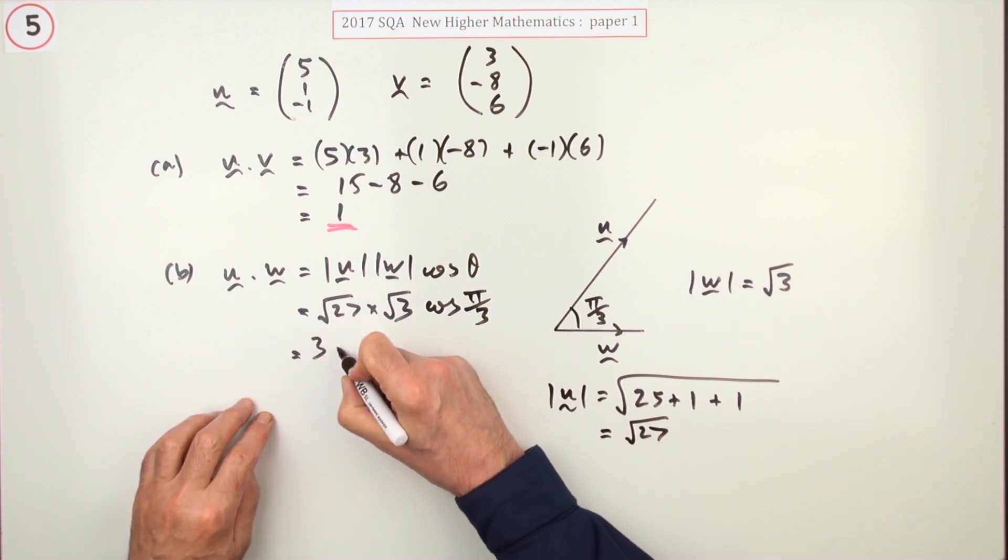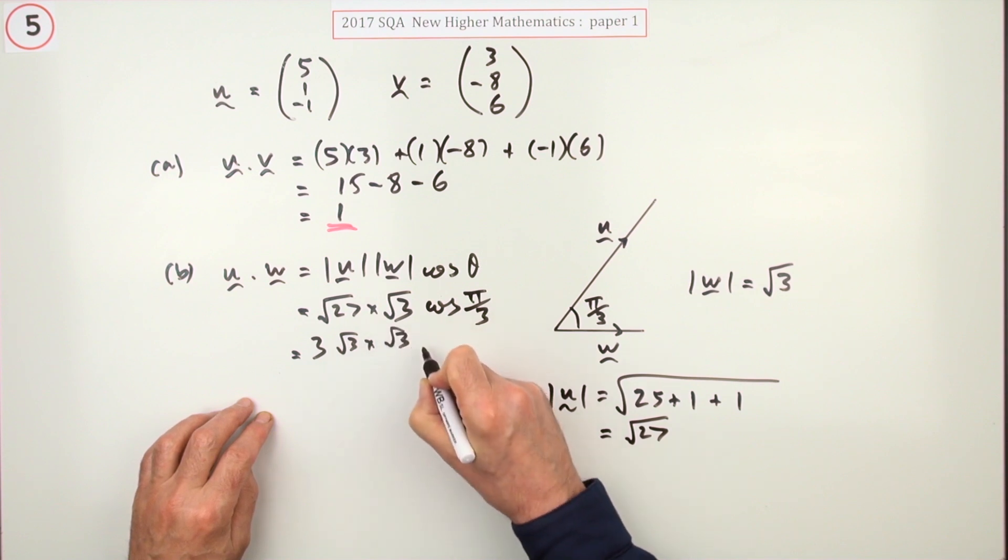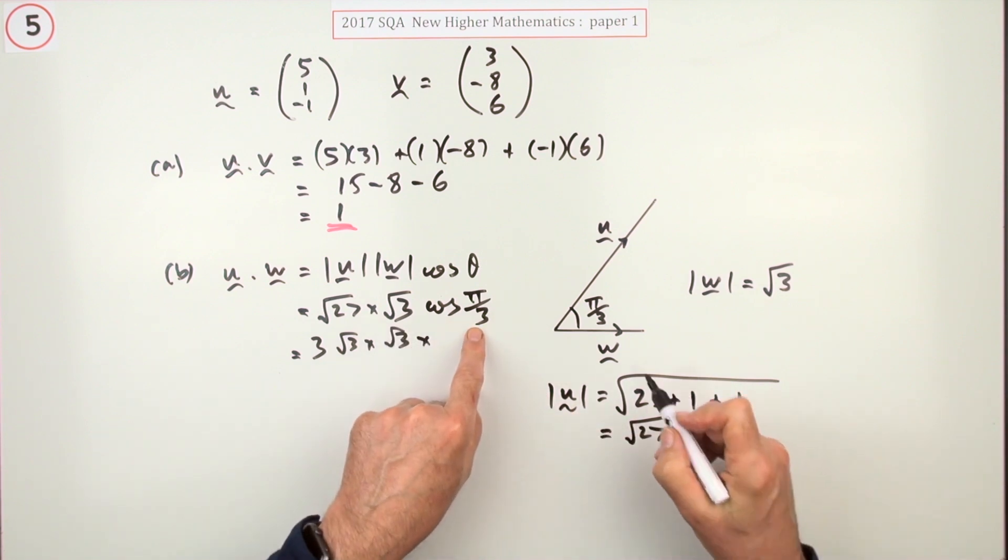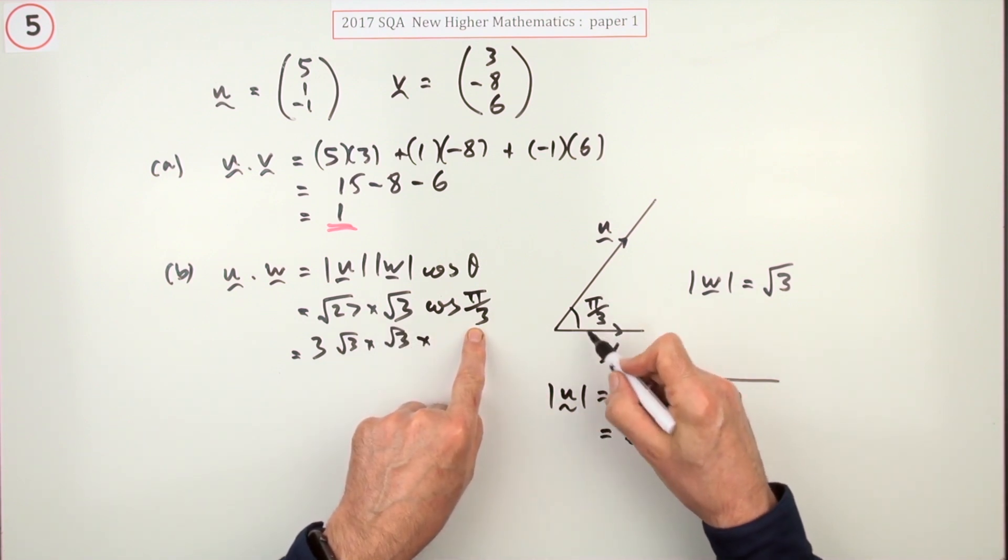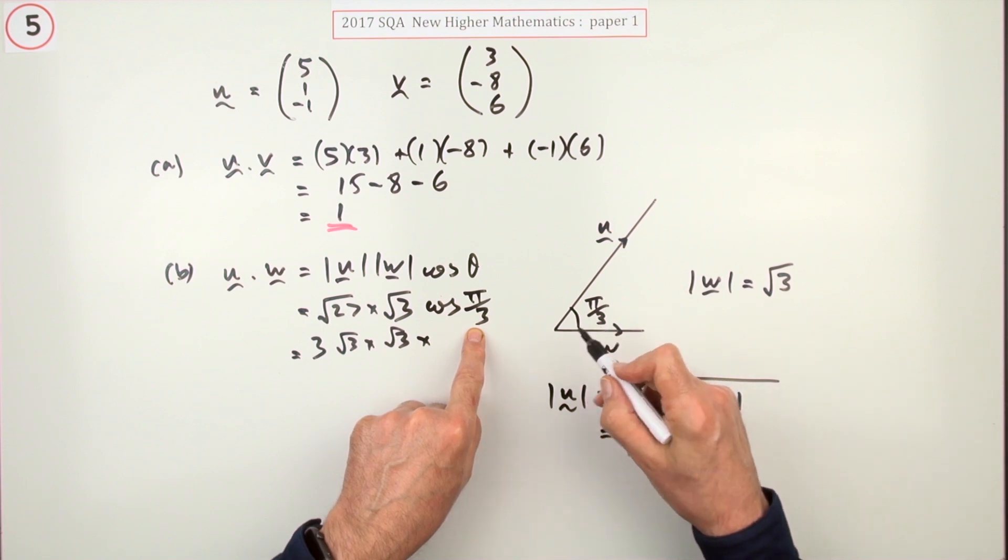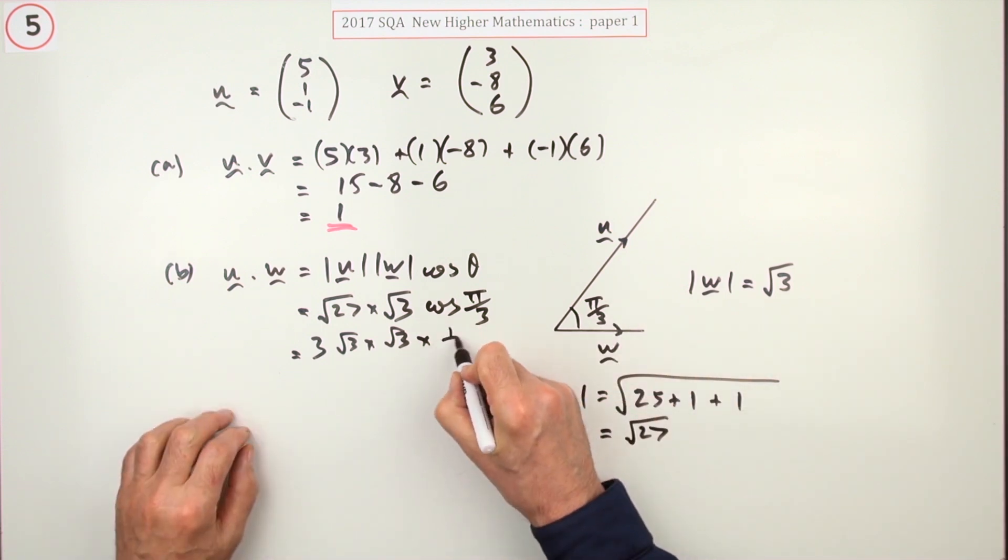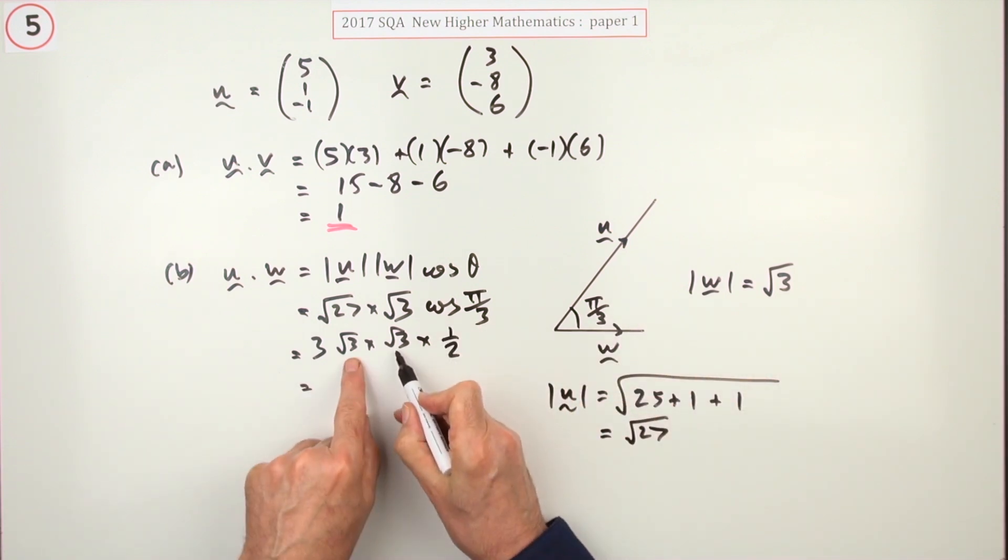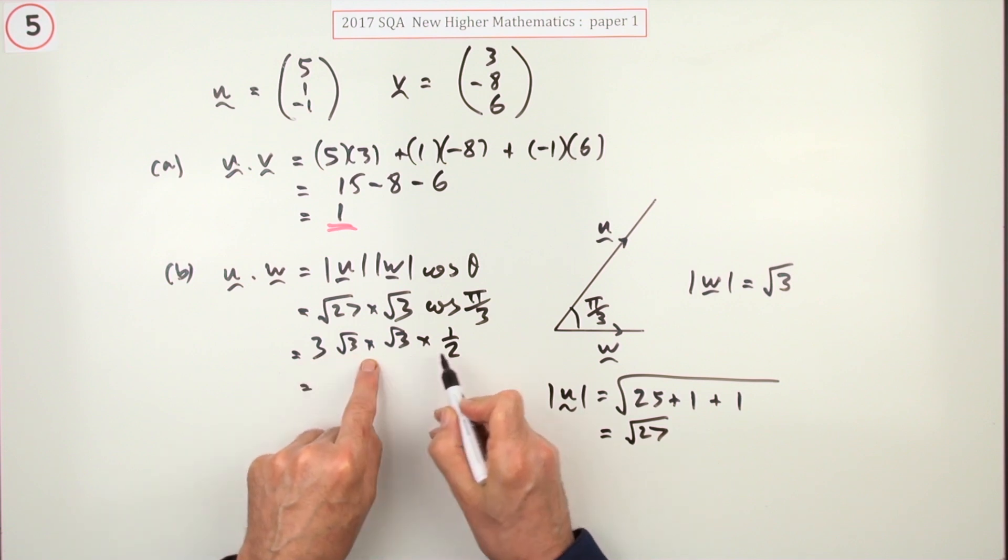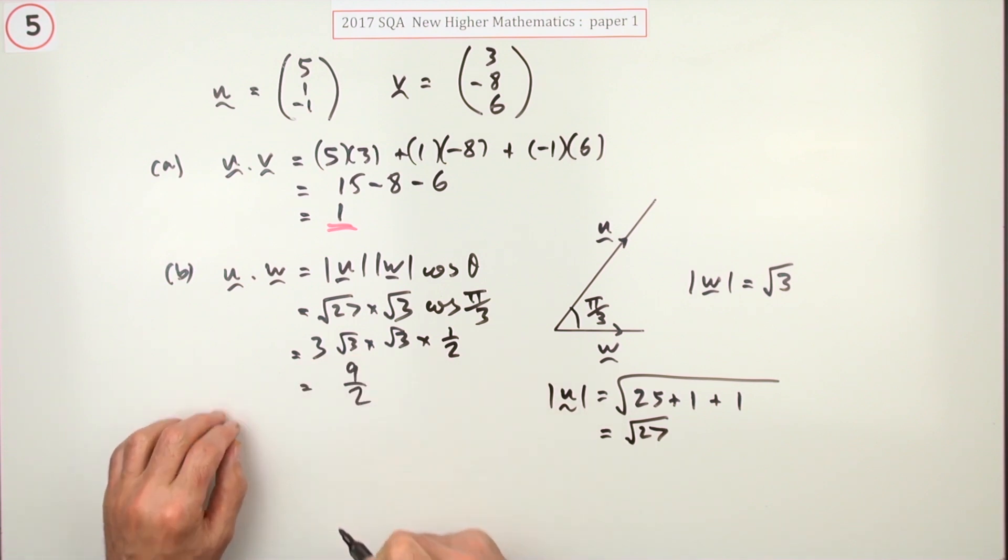So what have I got? I've got 3 root 3 times root 3 times the cosine of π upon 3. Cosine of π upon 3 is cosine of 60 which is a half. Root 3 times root 3 is 3, 3 threes are 9, so it's 9 upon 2.